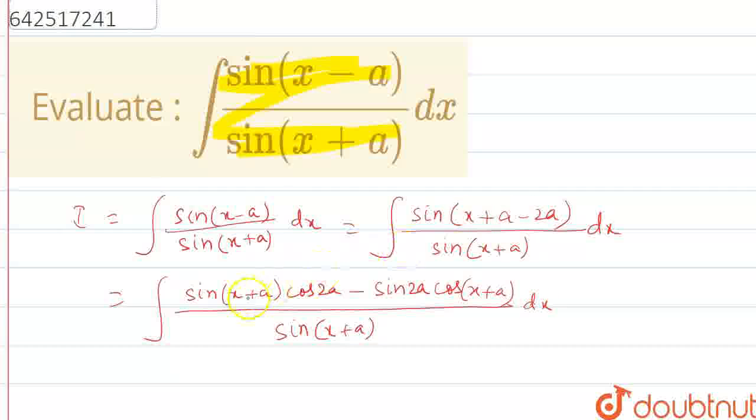This one can be split in this form by using the formula sin(A - B) as sin(A)cos(B) minus cos(A)sin(B).